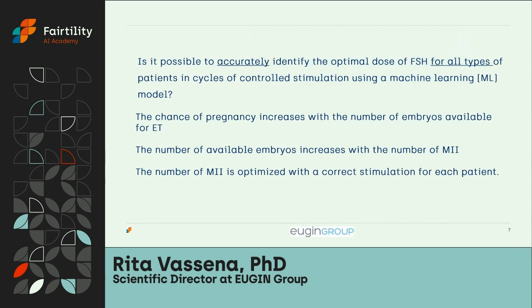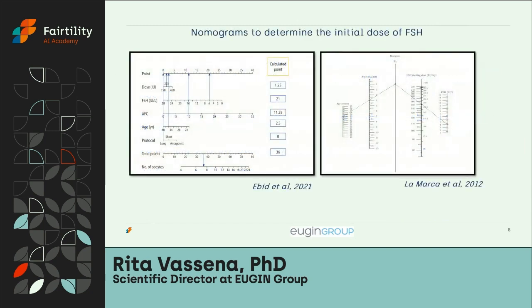We focused on this question because the chance of pregnancy increases with the number of embryos available for transfer. That number of embryos is tied to the number of mature oocytes (M2) collected from the ovaries, and the number of M2 is optimized with appropriate stimulation of each patient. This is not an entirely original question — published nomograms exist to determine the initial FSH dose. However, these nomograms tend to be developed only for normal ovulatory patients under the age of 40, leaving out the more complex cases where an appropriate nomogram could be most beneficial.